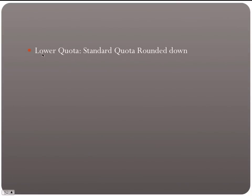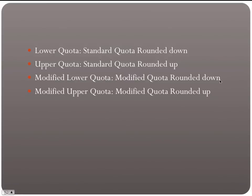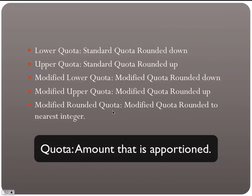A few more terms: a lower quota is a standard quota rounded down, and an upper quota is a standard quota rounded up. A modified lower quota is the modified quota rounded down, a modified upper quota is the modified quota rounded up, and the modified rounded quota is the modified quota rounded to the nearest integer. The quota is the actual amount apportioned to the different groups.